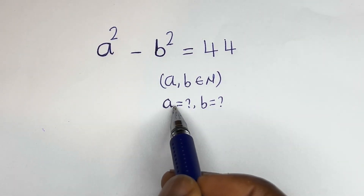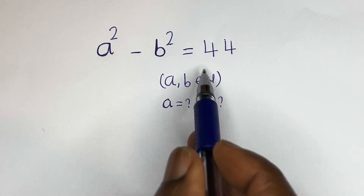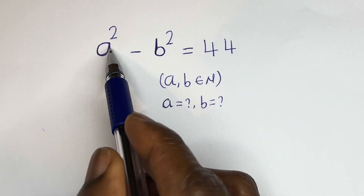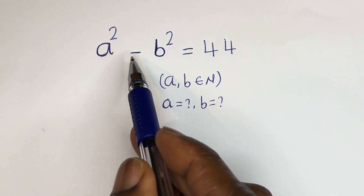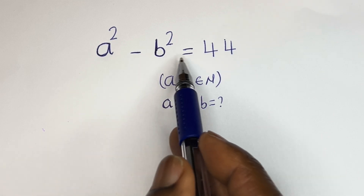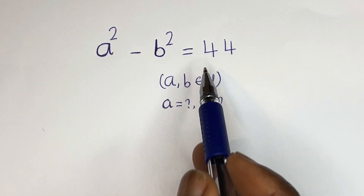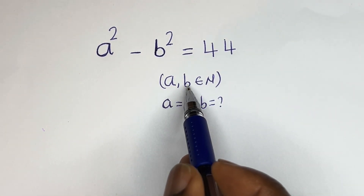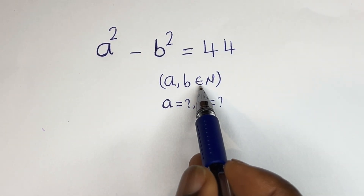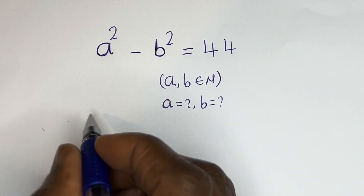Hello. How to solve for a and b in this equation: a squared minus b squared is equal to 44, where a and b are members of the natural numbers.